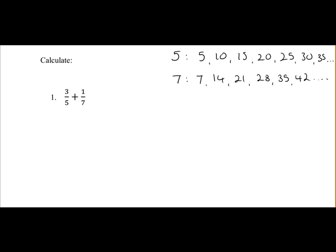So what we do is we pick out the number that's common to both. So the first number that's common to both, if we analyze it we can see 35 is the first number that's common to both. So we're going to use 35 as our lowest common denominator.